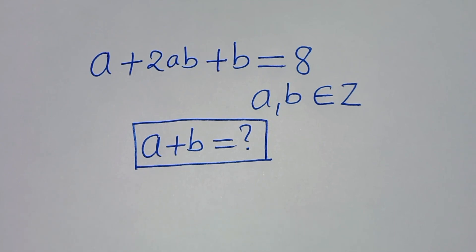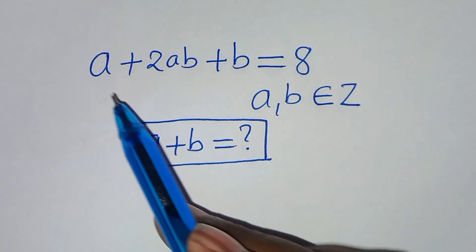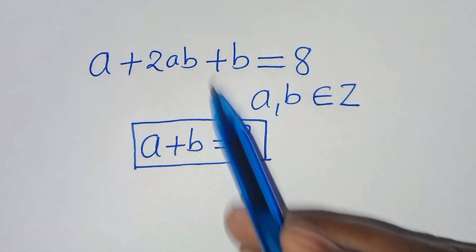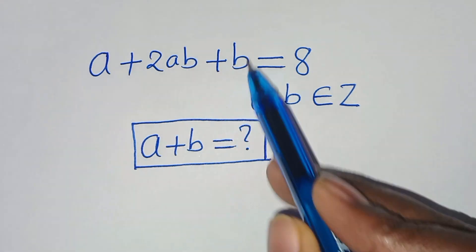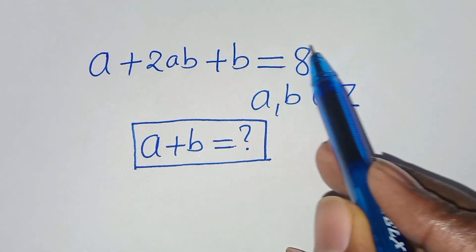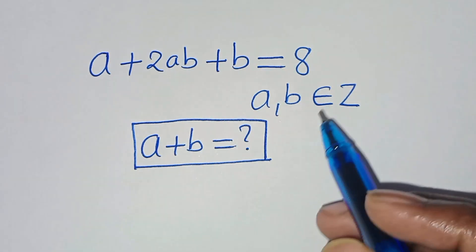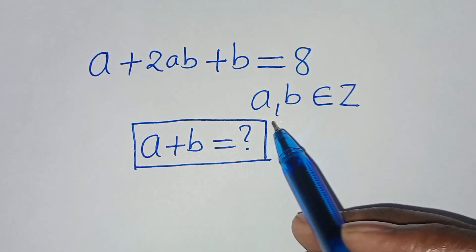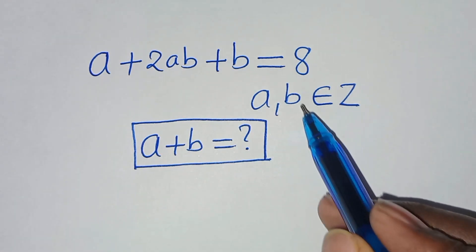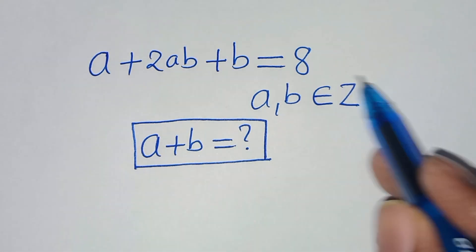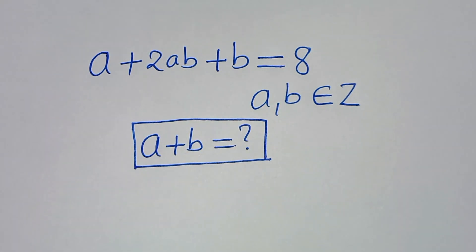Hello everyone, you're welcome to solve this nice algebra problem: a + 2ab + b = 8. So what is the value of a + b, given that a and b are members of integers? Now these can be positive or negative integers.